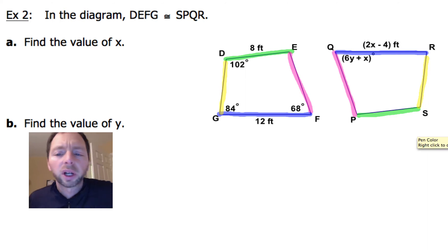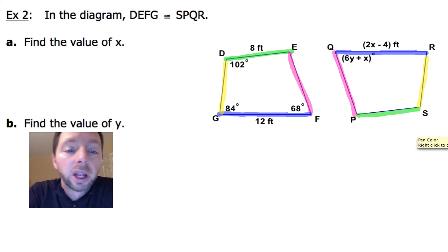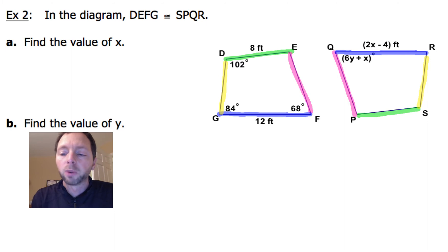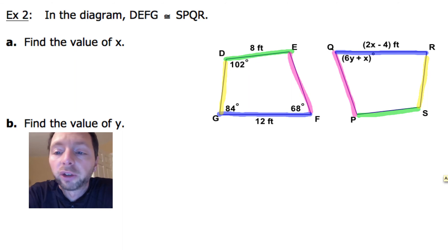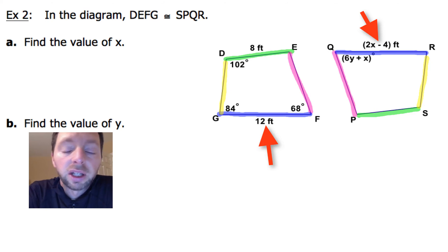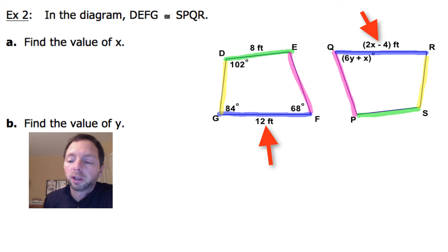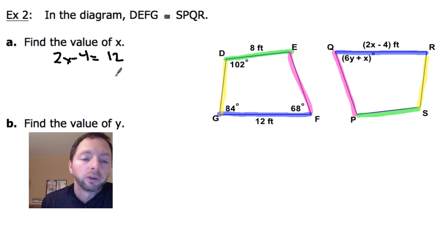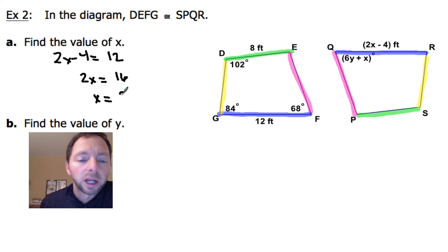When I have that, it's easier to see which pieces I'm going to use to find the values for X and Y. To find the value of X, I look at where X is located — it's in segment QR. The corresponding side on figure DEFG is 12 feet. So all we need to do is set up the equation: 2X minus 4 equals 12. Solving for X, we add 4 to both sides to get 2X equals 16, and then using the division property of equality, we get X equals 8.